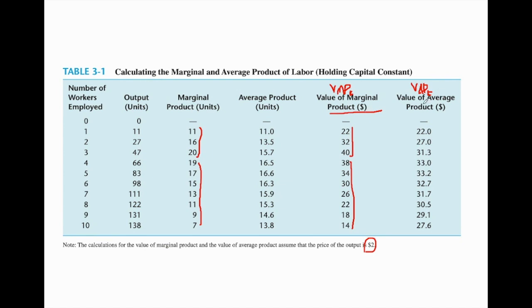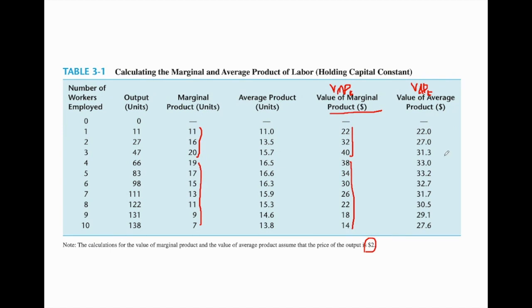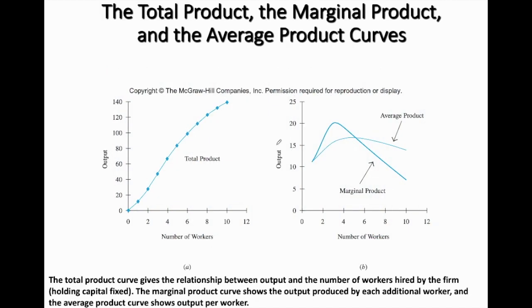We also derive the value of average product of worker using the formula: VAP_E = price × average product of worker. Again, we use price here because we assume our firm operates in a competitive product market where marginal revenue equals price. If the firm is not in a competitive product market, you must use marginal revenue instead of price. With this formula, we can also calculate the value of average product of worker and plot the corresponding curves.